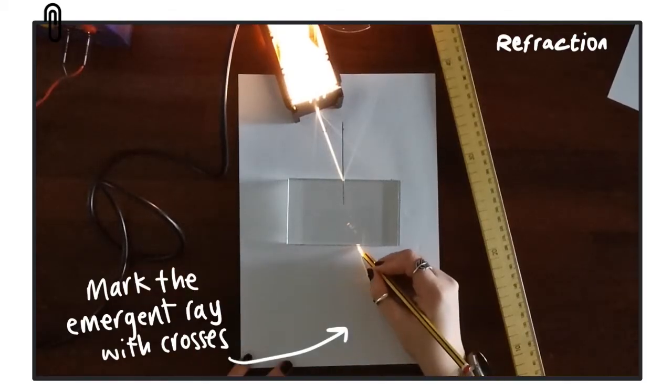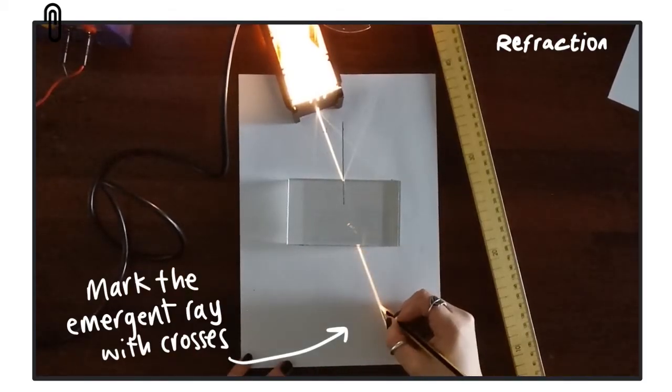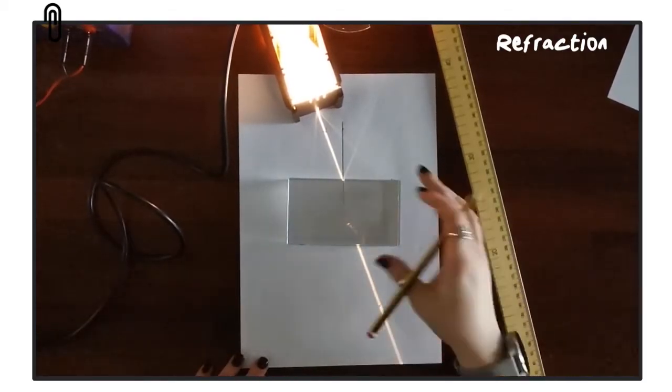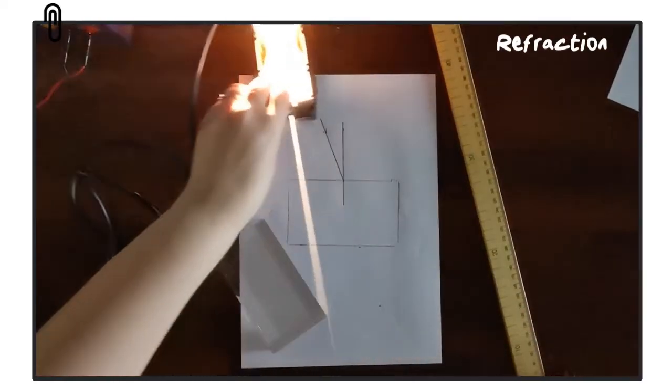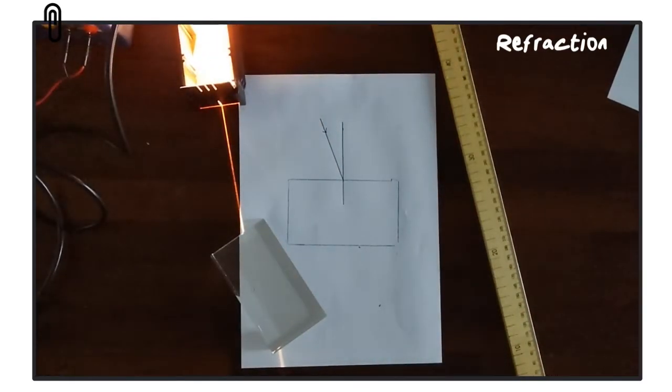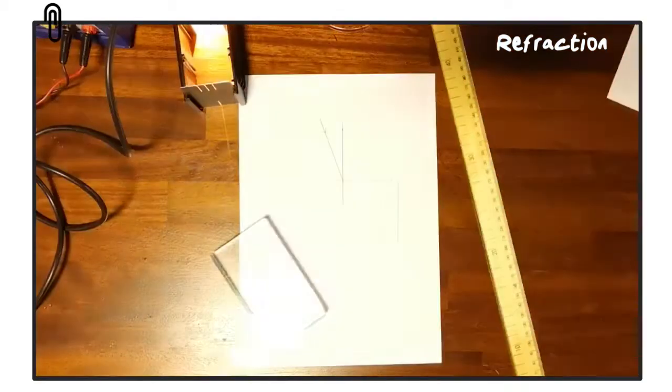So we can see the incident ray of light where it hits the block. We're interested in the refracted ray, which is inside the block. So in order to figure out where that is, because we can't draw on the block, we mark out where the emergent ray is.